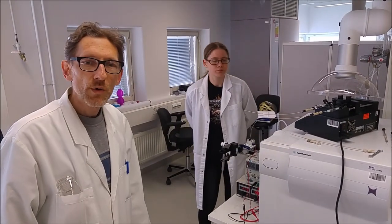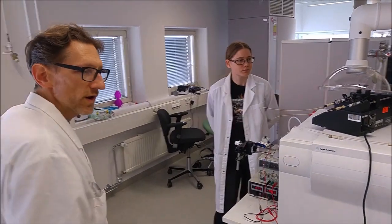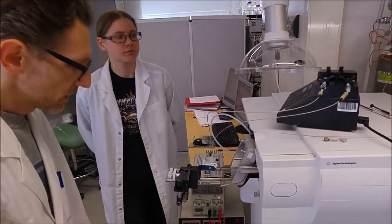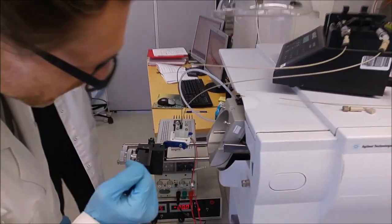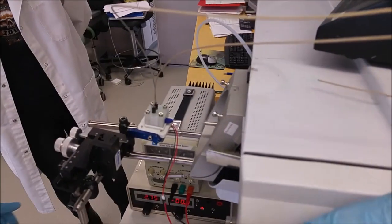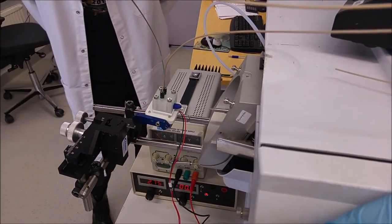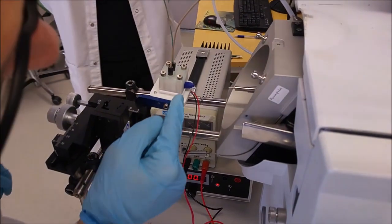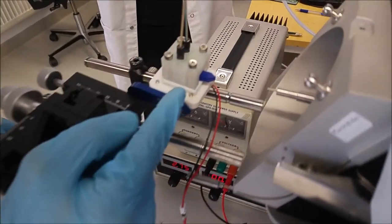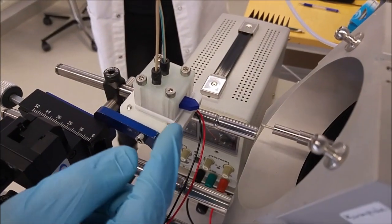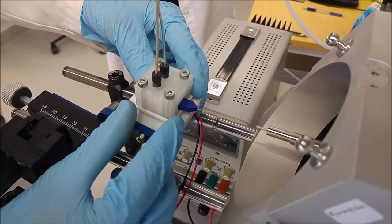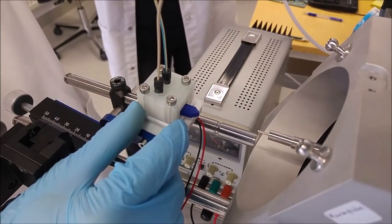We are now in our mass spectrometry lab where our experimental setup is. Here you see of course our mass spectrometer. It is an ion trap. And attached to it is our micro-reactor.